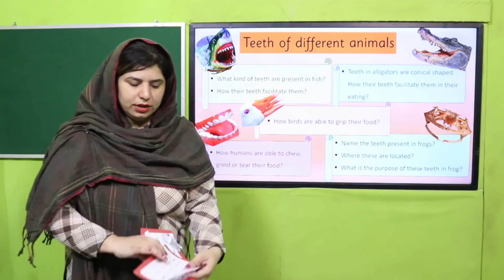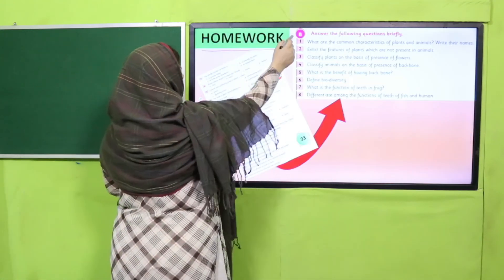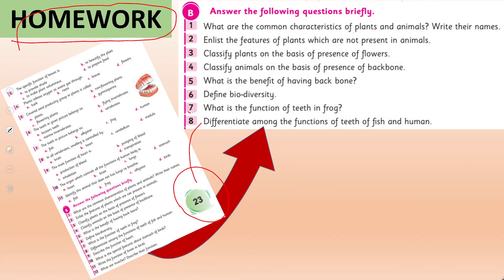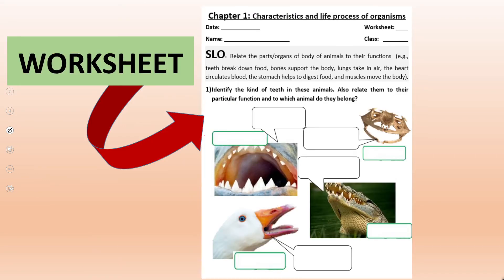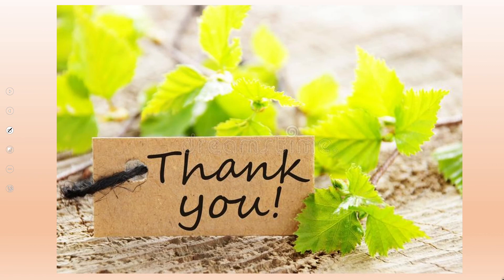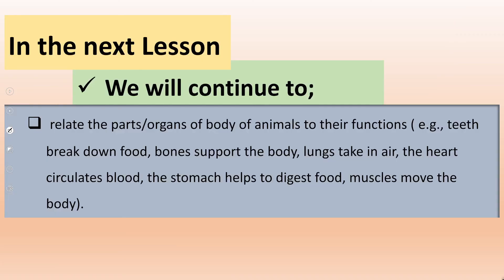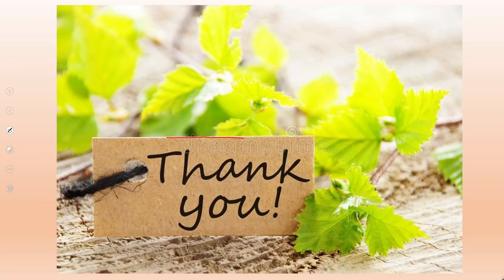This will make the concept more clear. Homework is given from your book on page number 23, question numbers 7 and 8, which contain questions related to teeth from today's lecture. A worksheet is also available for further practice. In the next lesson, we will learn about how bones relate to their role and how lungs take in air.